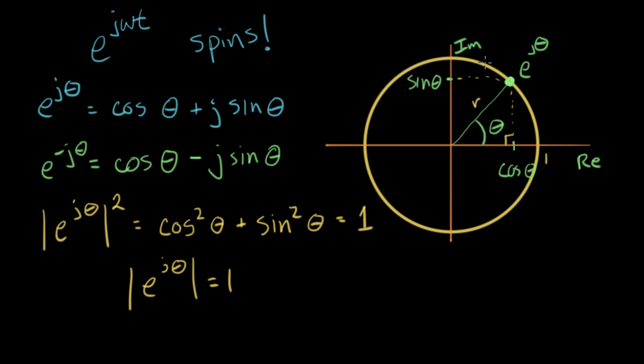So e to the j theta is somewhere on this circle. And the angle is what? The angle is right here. It's whatever is multiplied by j up in that exponent. Anything that multiplies by j, that's an angle.